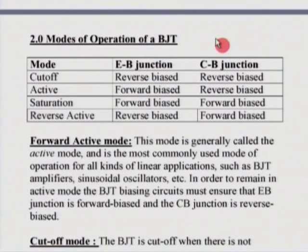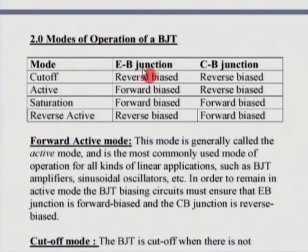Coming to the modes of operation of a BJT, there are four modes of operation. There are two junctions, so there are four possibilities. If you reverse bias both junctions — that is the emitter-base junction and the collector-base junction — we can think of the device being cut off.